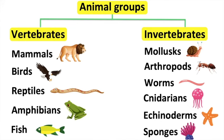Arthropods live on land. There are many different types of arthropods — for example, ants, spiders, crabs, and millipedes. Arthropods can have different numbers of jointed legs: some have six, some have eight, some have ten, and some have even more than ten. They also have an exoskeleton.